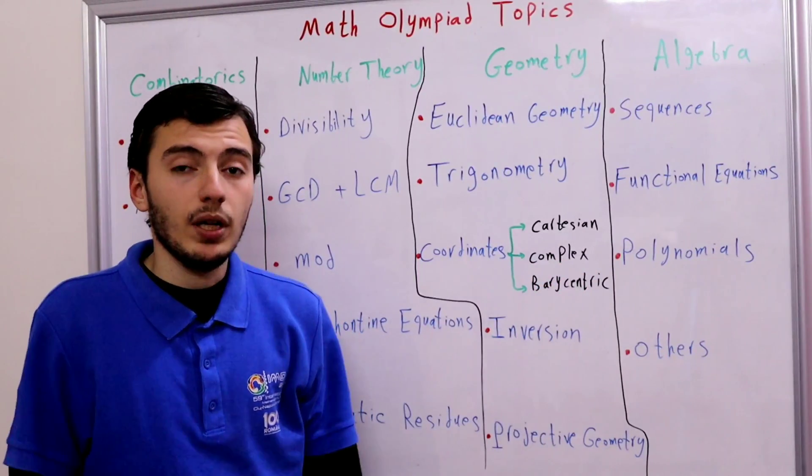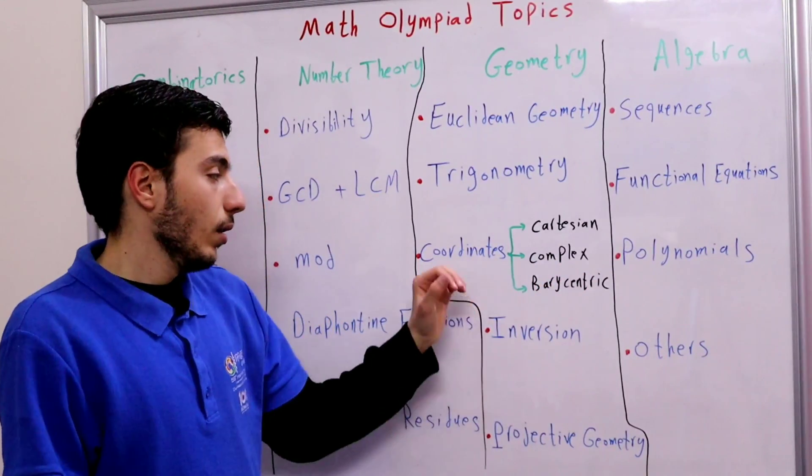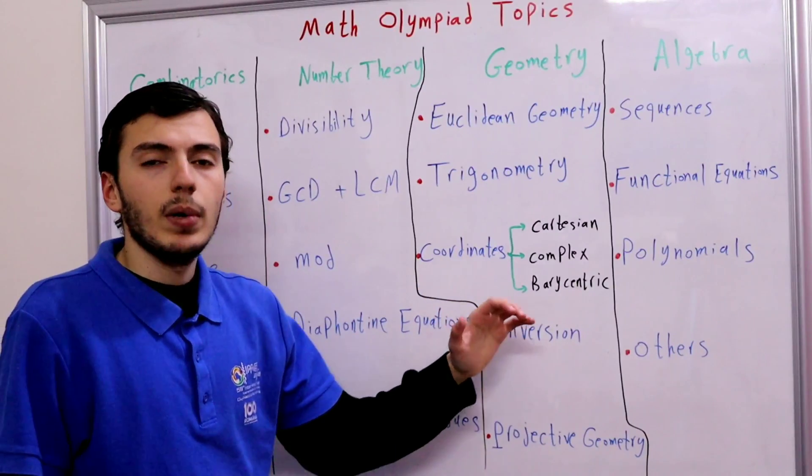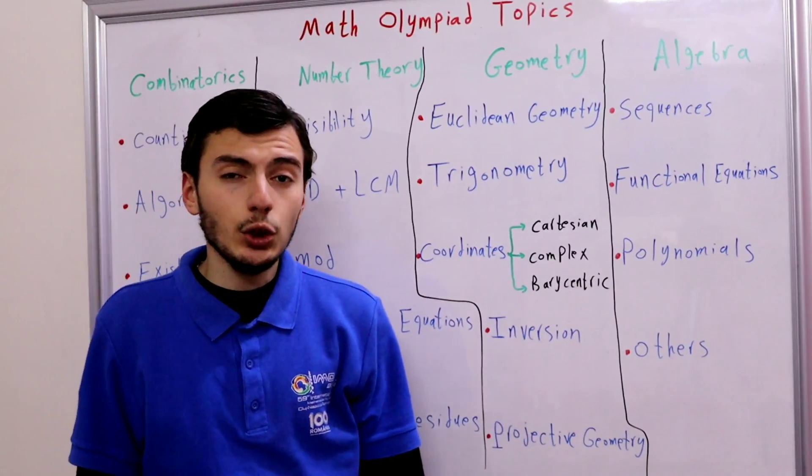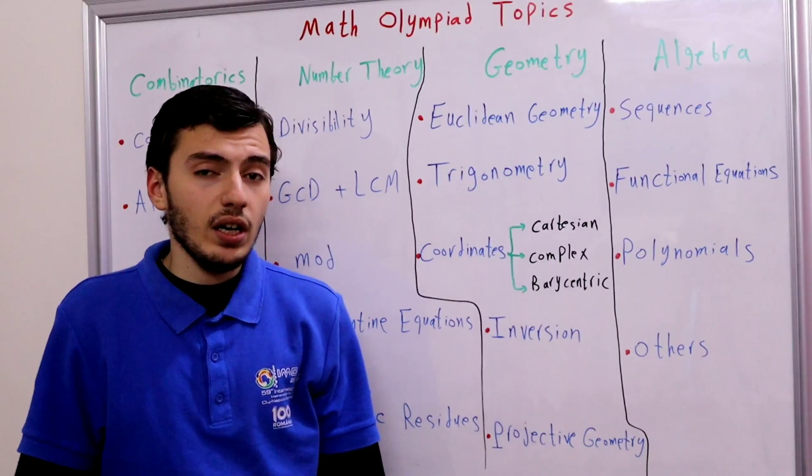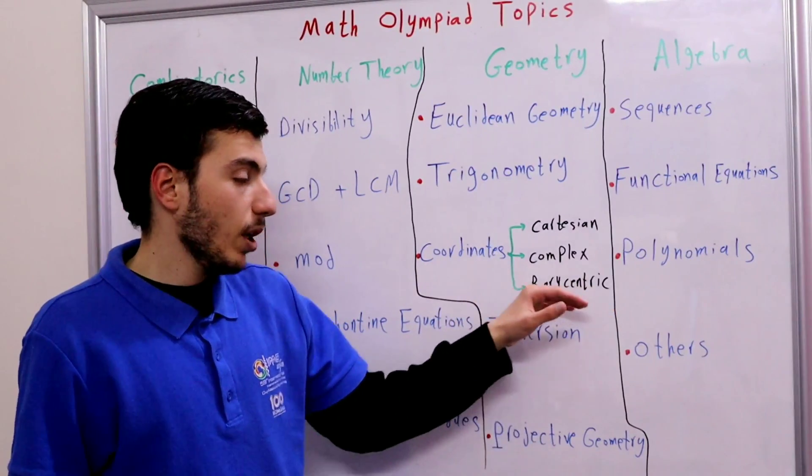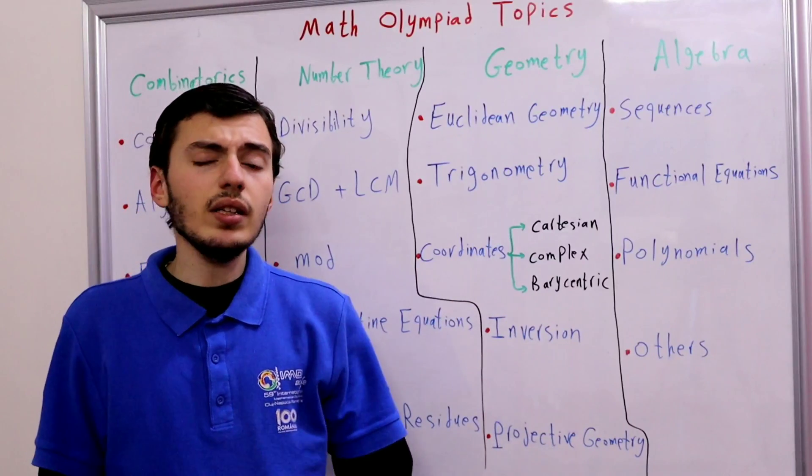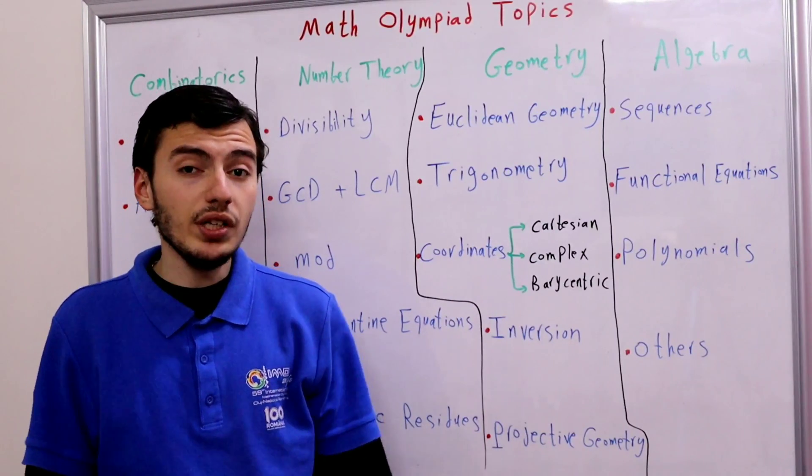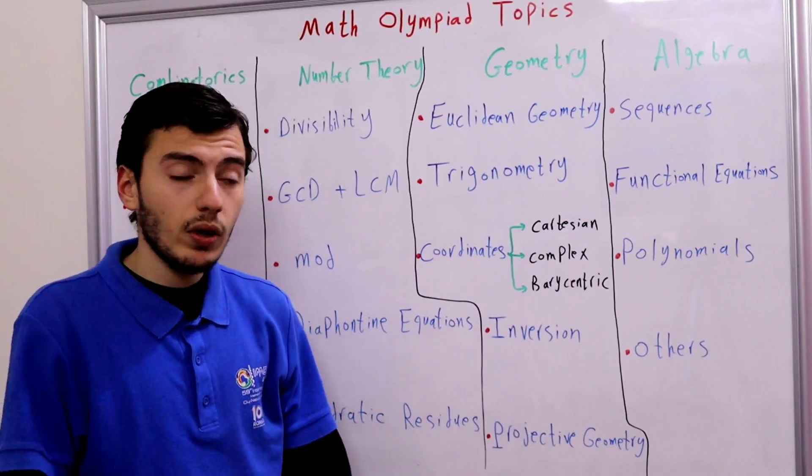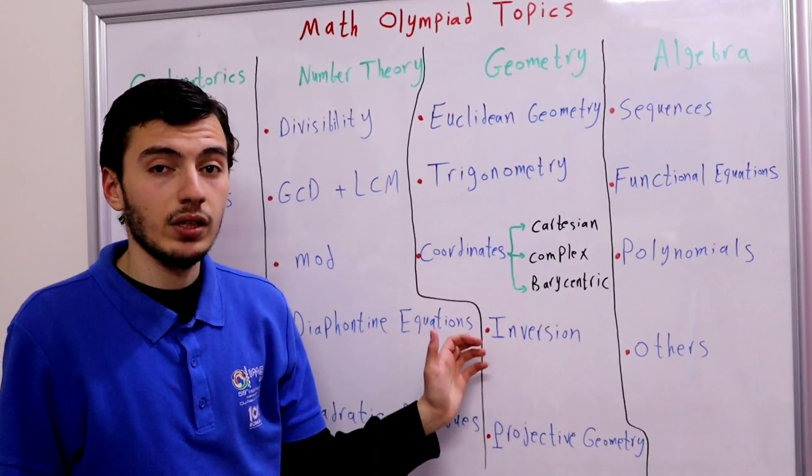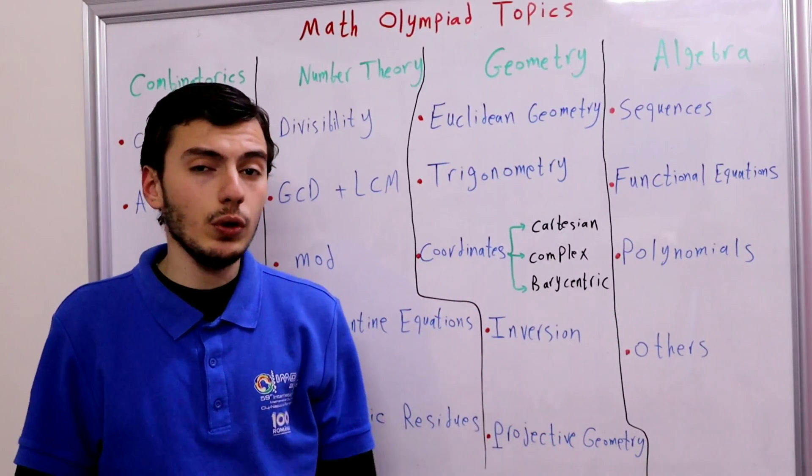But my favorite coordinates of all time is barycentric coordinates. Actually I've solved the IMO 2019 problem 2 using this barycentric coordinates and there are lots of recent IMO problems that can be crashed using barycentric coordinates. So it's really useful and you should really learn it.